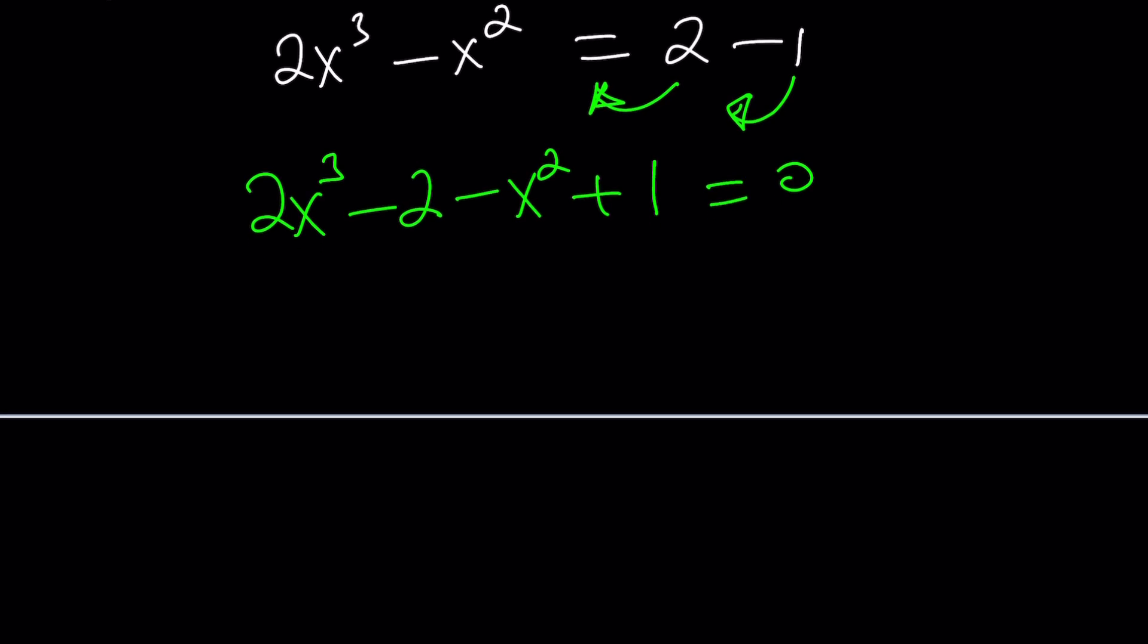I hope it does. So let's go ahead and factor out a 2 here. That gives us x cubed minus 1. And a minus 1 here will give us x squared minus 1. Now, do you see what I'm talking about? We have two factorable polynomials. And, moreover, they have a common factor.